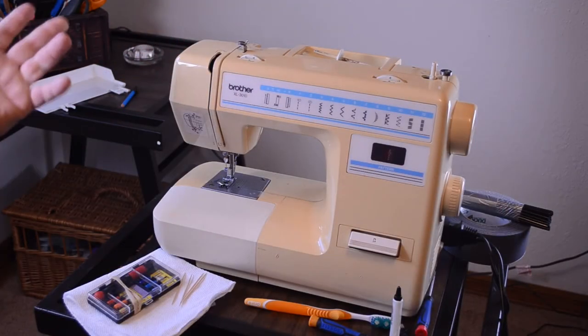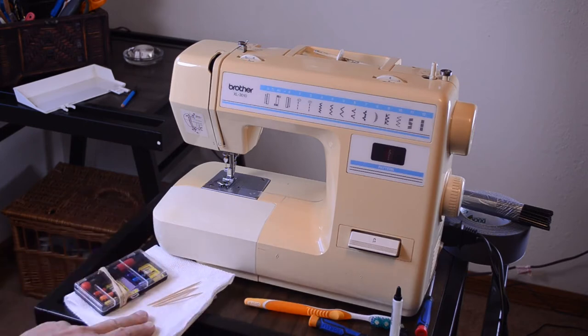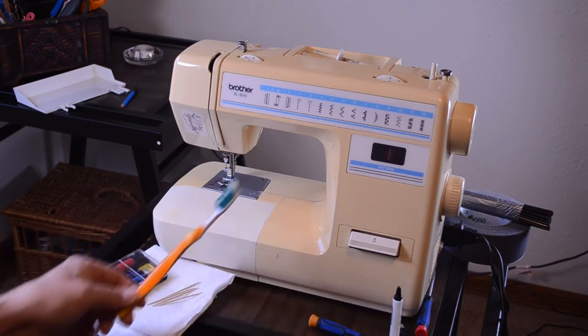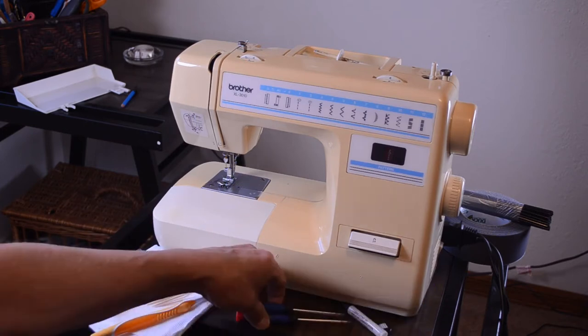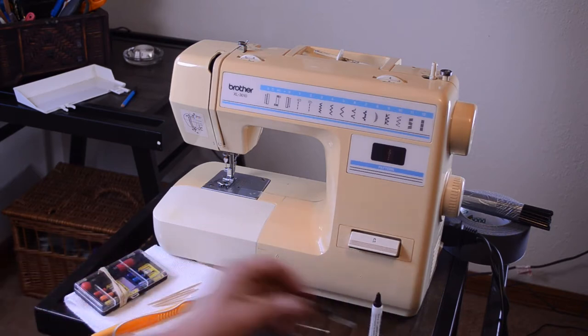That's what we're gonna do and then once we're done with this we're gonna work on her serger. And before we get started, a few tools that we're gonna need. Some small screwdrivers. I'm gonna use some toothpicks. Paper towels. Nice soft toothbrush. Some other screwdrivers I'm gonna need. Some lubricating oil. That's what came with this one. And this little brush.